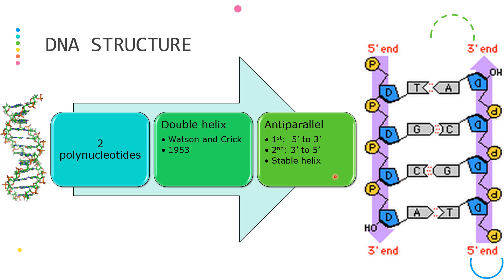The polynucleotides must be anti-parallel in order to form a stable helix.